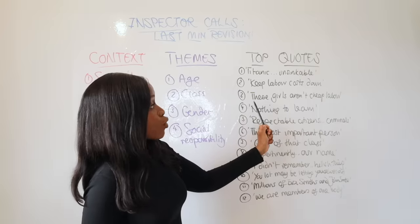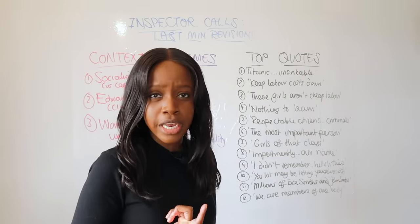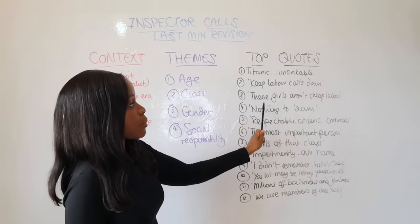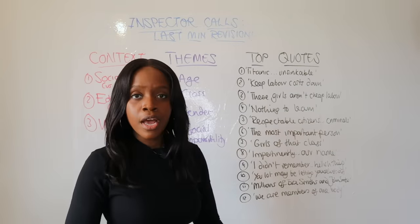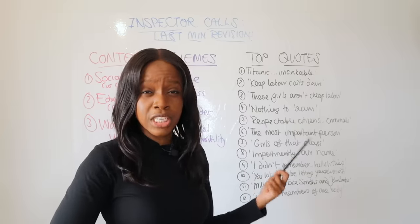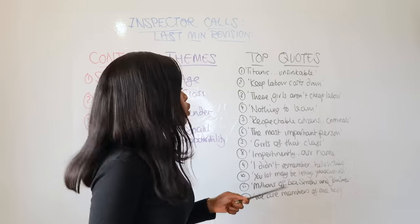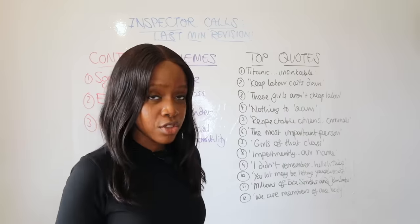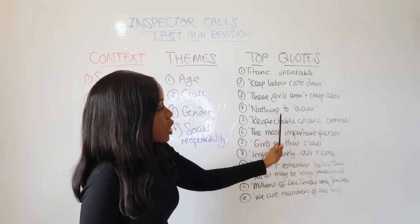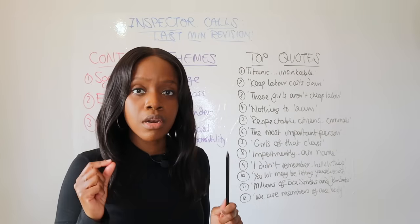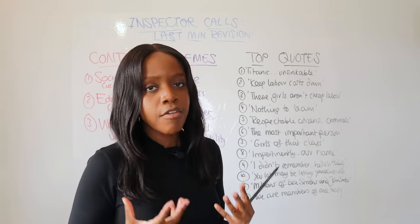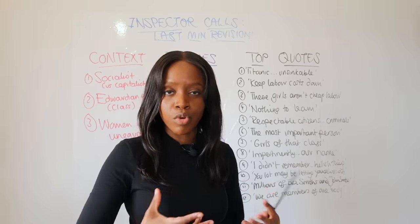For Sheila, the first quotation illustrates she is already changing and starting to see working-class people as human beings. She criticizes her father by saying, 'These girls aren't cheap labor, they're human beings,' showing she thinks very differently to her father as part of the younger generation. The second quotation, from Act Three, is when she criticizes the family: 'there's nothing to learn' — with the repetition of 'nothing' showing Sheila is deeply critical and disgusted with her family's reaction to the Inspector, and feels very remorseful.